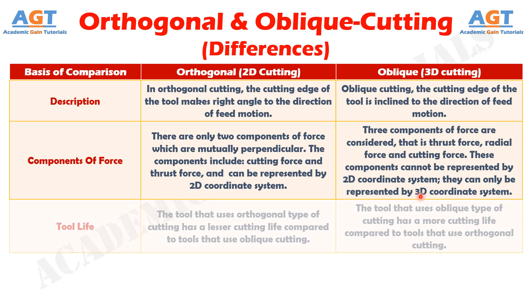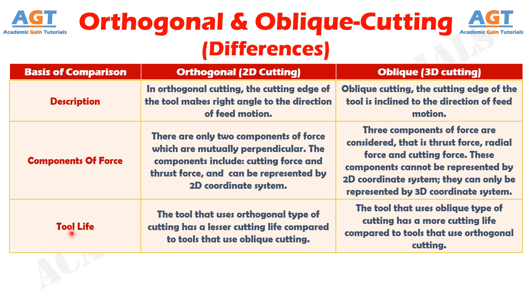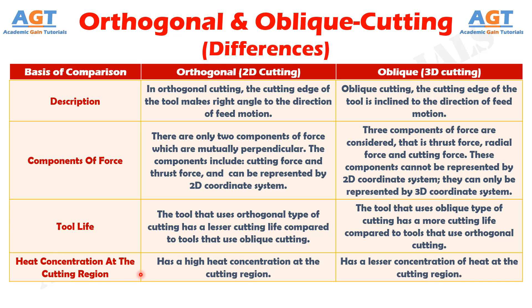If we differentiate them in terms of tool life: the tool that uses orthogonal cutting has a lesser cutting life compared to tools that use oblique cutting. Whereas the tool that uses oblique cutting has a longer cutting life compared to tools that use orthogonal cutting. If we differentiate them in terms of heat concentration at the cutting region: orthogonal cutting has a high heat concentration at the cutting region, whereas oblique cutting has a lesser concentration of heat at the cutting region.